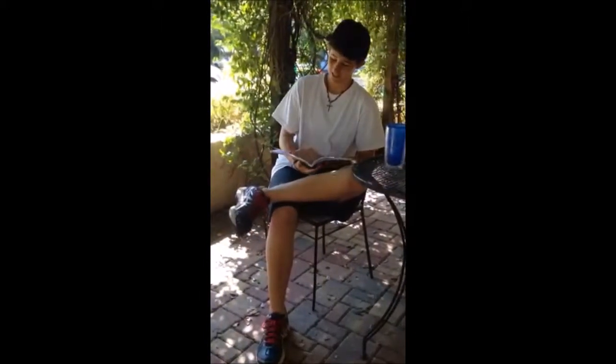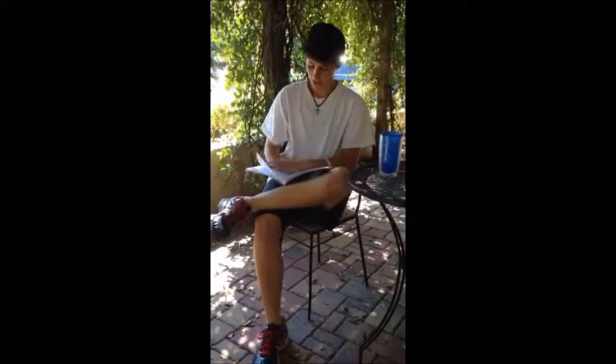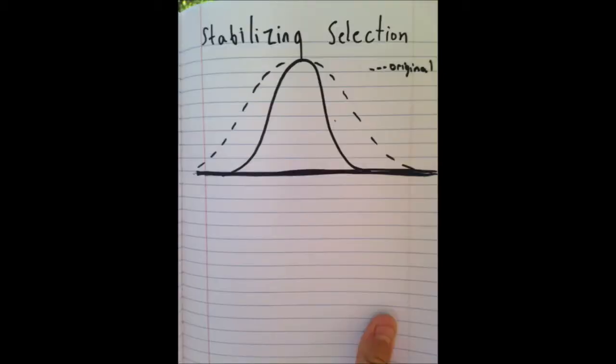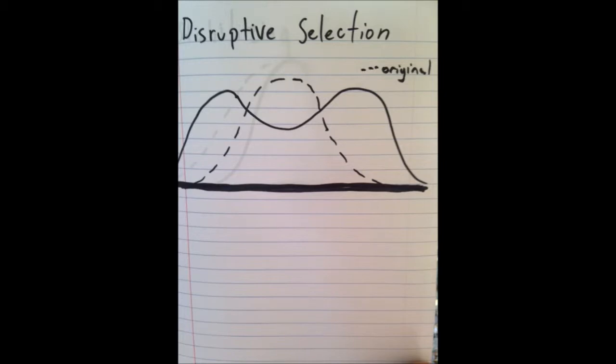Our next point is the types of selection. There are three types of selection: directional, stabilizing, and disruptive. Directional selection acts to eliminate one extreme and often occurs when the environment changes. Stabilizing selection acts to eliminate both extremes, making intermediate traits more common. Disruptive selection acts to eliminate intermediate types.